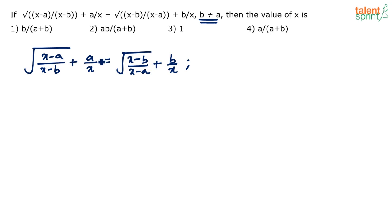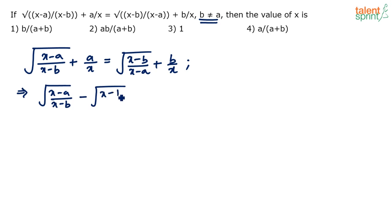Let's simplify rather than go for substitution. This leads us to: (x-a)/(x-b) − (x-b)/(x-a) = b/x − a/x, i.e., (b−a)/x on the right-hand side.